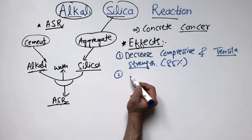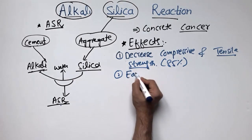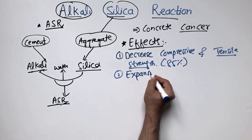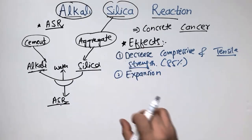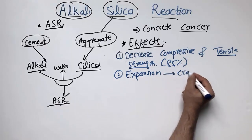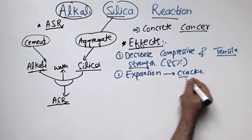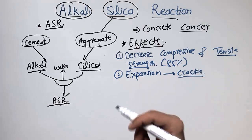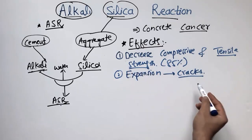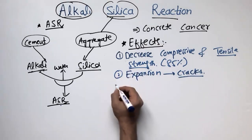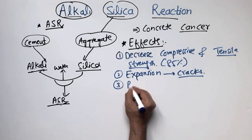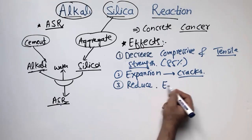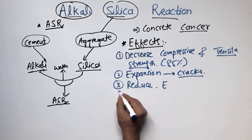The second effect of alkali silica reaction is that it creates expansion of the concrete structure. Because of this expansion, there are many cracks, and through these cracks other aggressive components like chloride and sulfate can attack the concrete and further affect its durability.